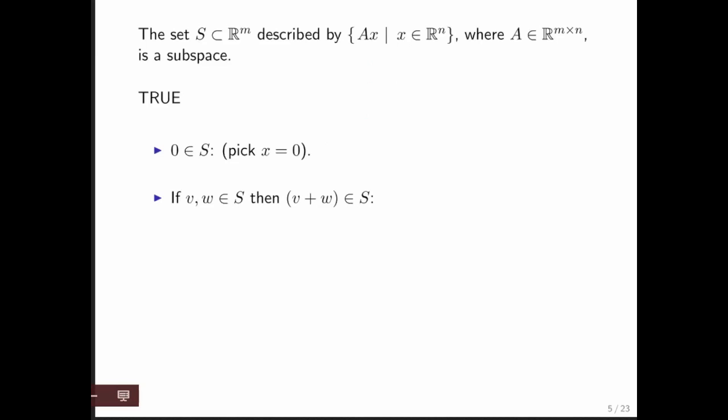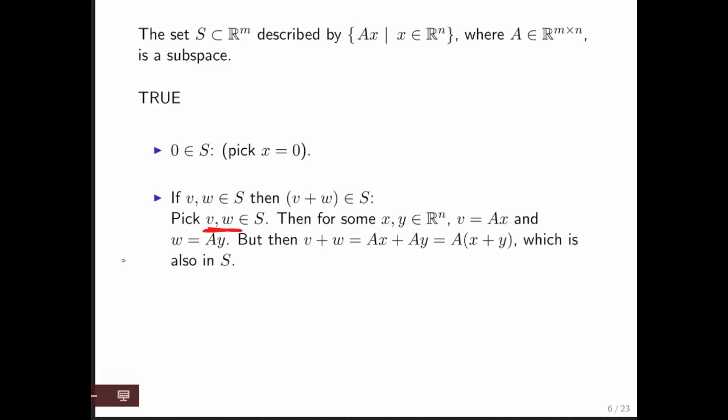Okay, now if we pick two vectors in this set, then it is not hard to show that V plus W is in this set. How do you do that? Well, you pick two arbitrary vectors in this set. Then you know that the first vector V is the result of A times X for some vector X, and you know that the other vector W is the result of A times Y for some vector Y.